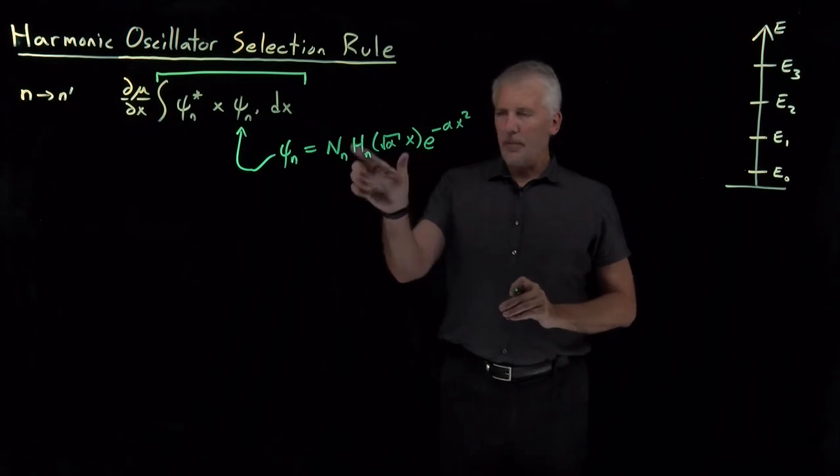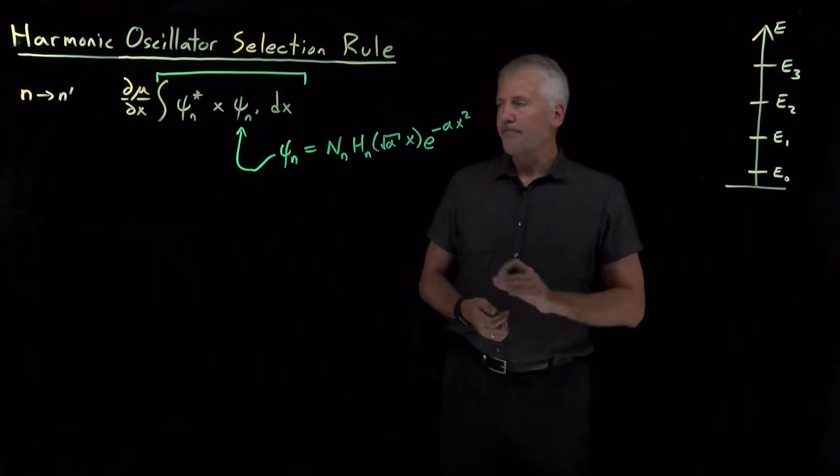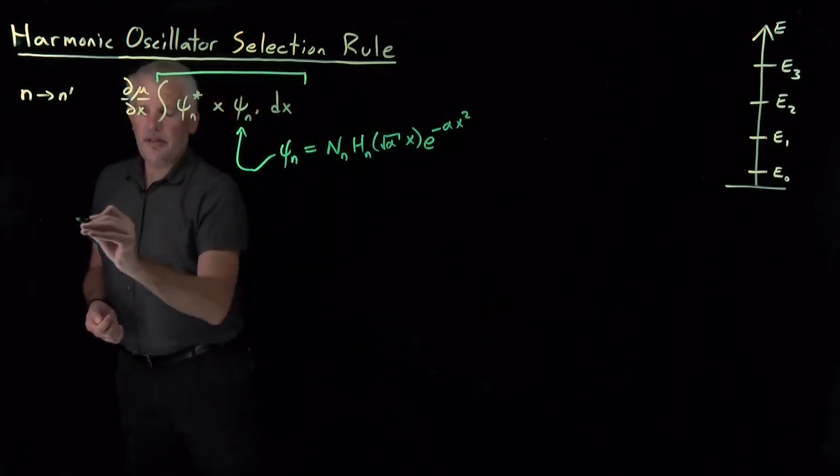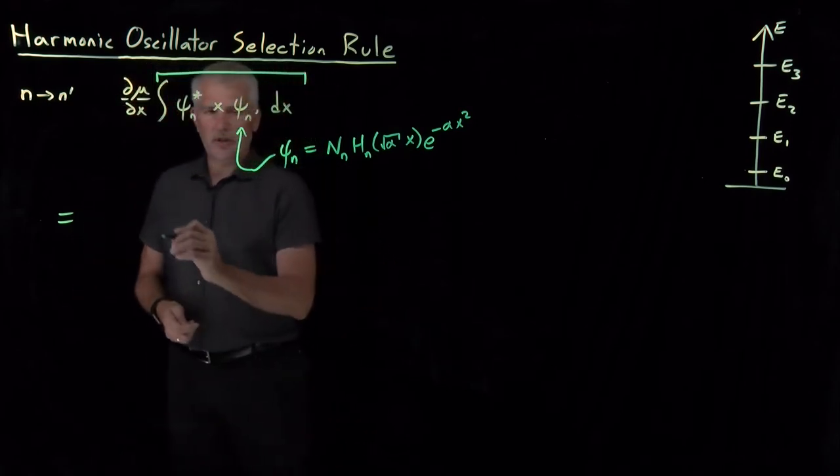We won't have to get any deeper. We won't have to write down what any of these Hermite polynomials are in order to do these integrals today. But if we remember that, then this transition dipole moment, at least the integral portion of the transition dipole moment, ends up looking like...